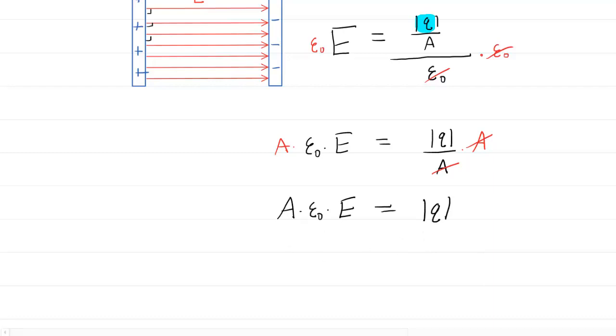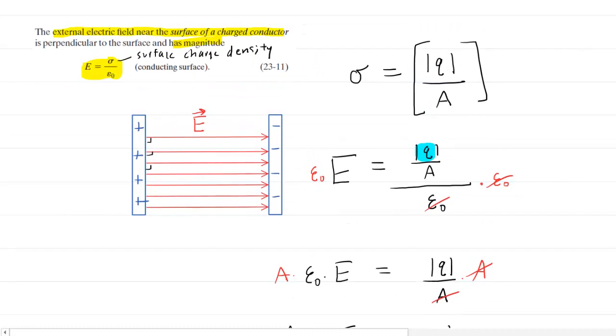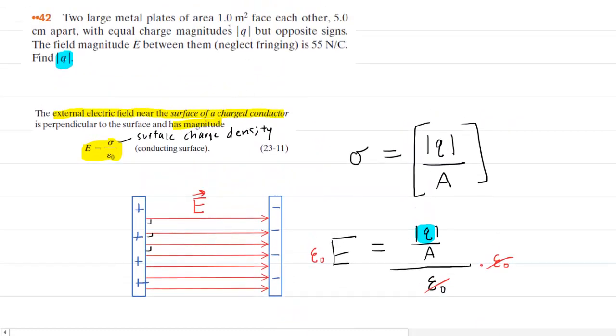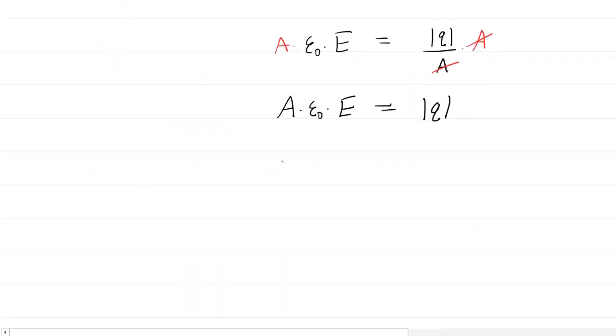The area of the plate was given in the question to be 1 meter squared. We have the electric field magnitude of 55 newtons per coulomb, and then that constant value epsilon naught is equal to 8.85 times 10 to the minus 12, with units of coulombs squared per newton meters squared. We're going to come back down to our equation and plug in all three of those values.